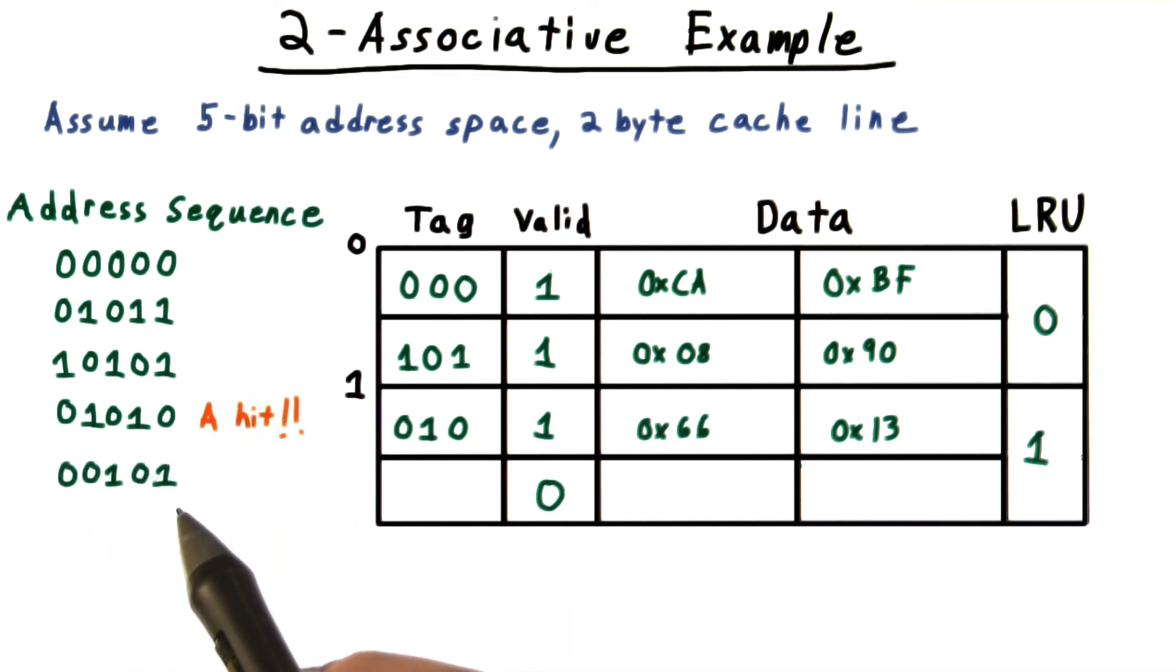Next, we have another address with index zero. So he comes in here and evicting one of the previous entries. This one because of the LRU bit.